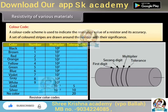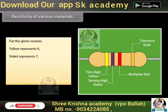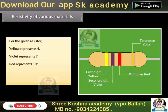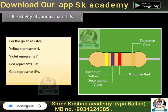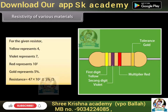Let's take an example. For the given resistor, yellow represents 4, violet represents 7, red represents 10 raised to the power 2, and gold represents 5% tolerance. Combining the above data, the total resistance of the given resistor is 47 × 10² ohm with 5% tolerance.